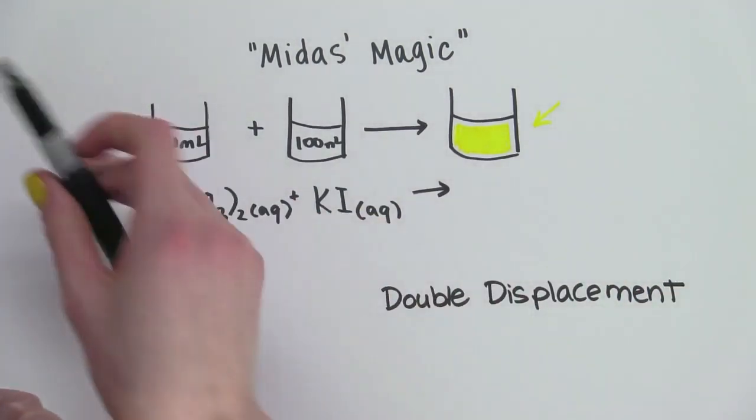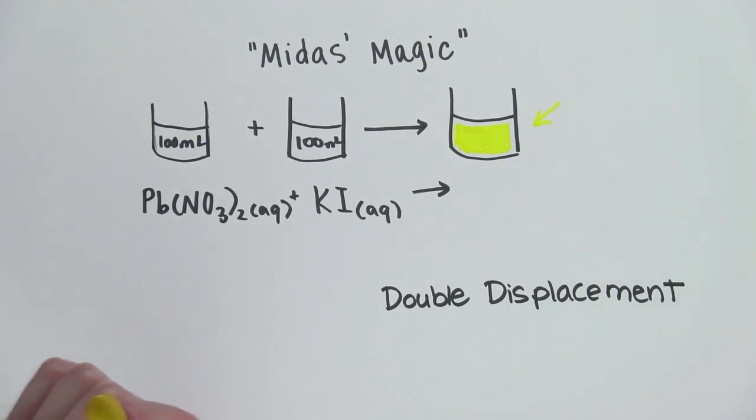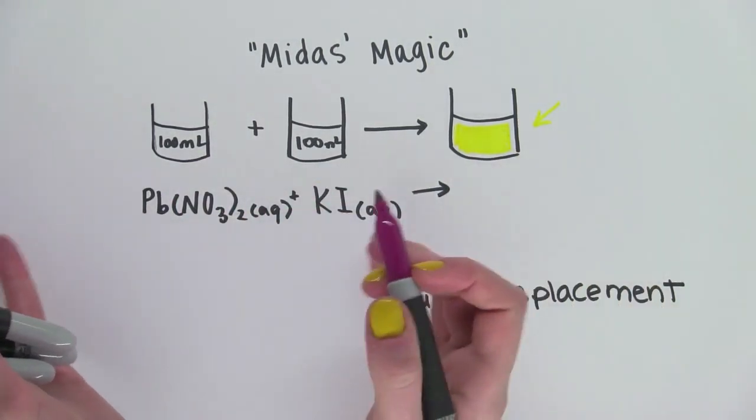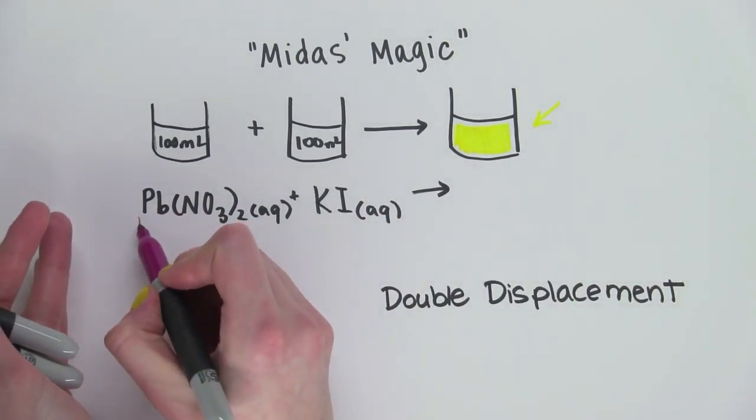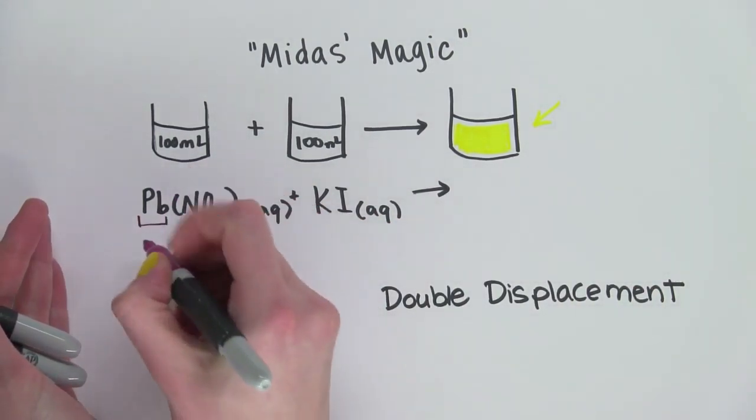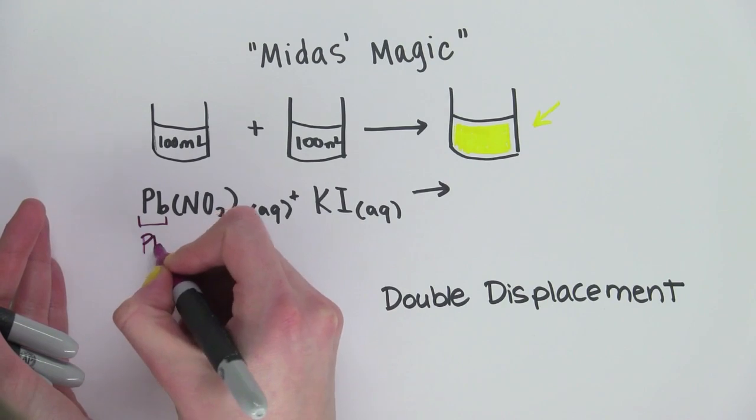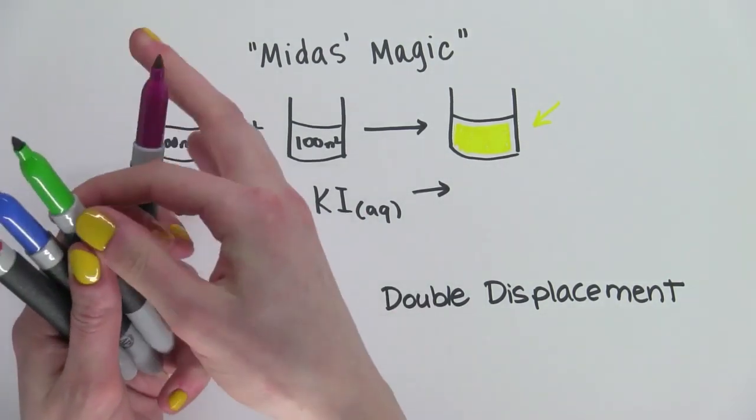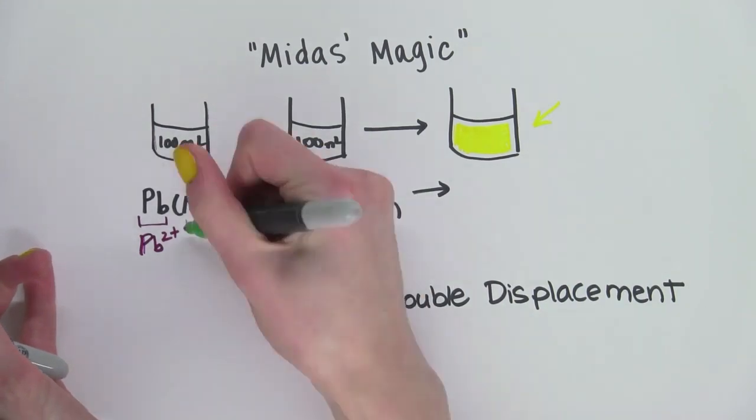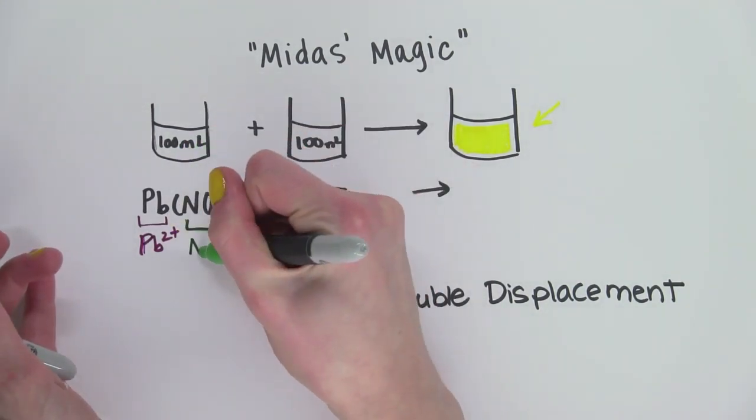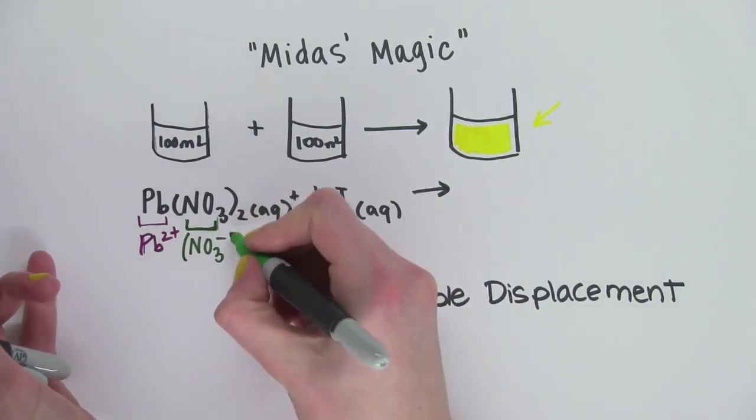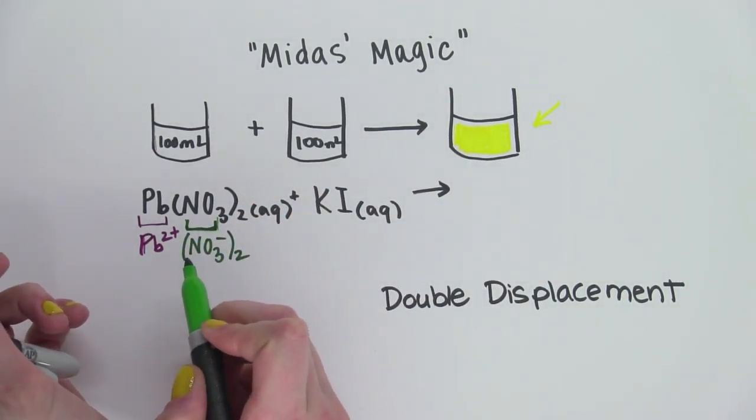So we've got cations and anions in each of these compounds. The cations have positive charge. So in this case, it's lead, which has a 2 plus charge, and nitrate, NO3 minus. You need two of those to have a neutral compound.